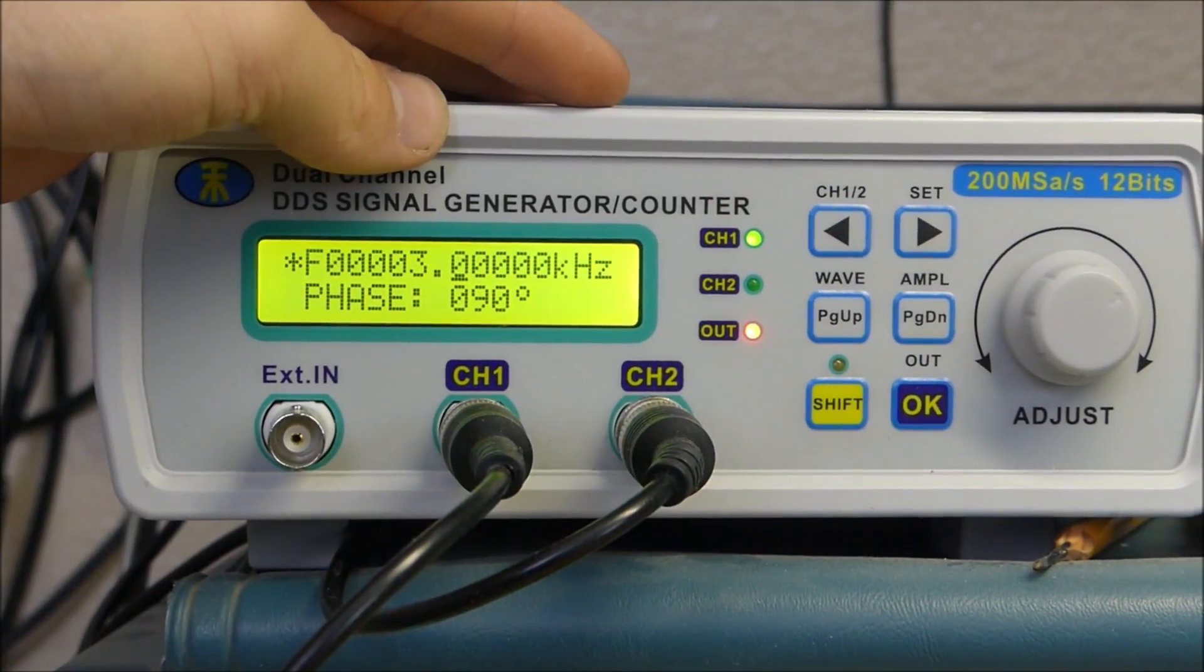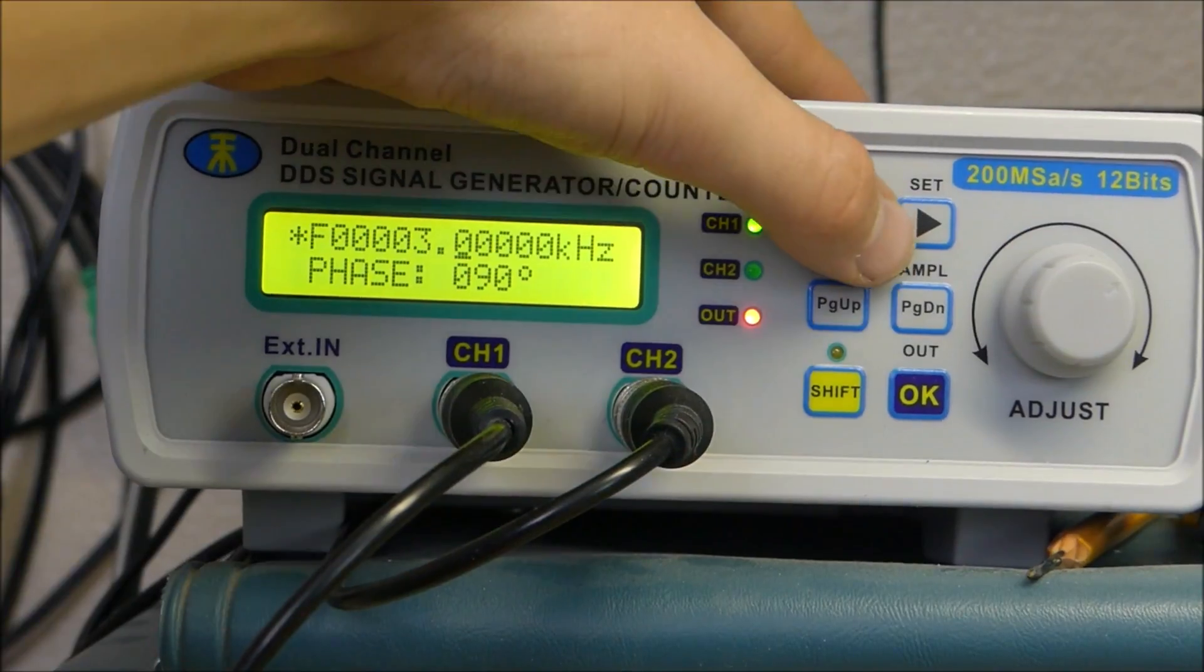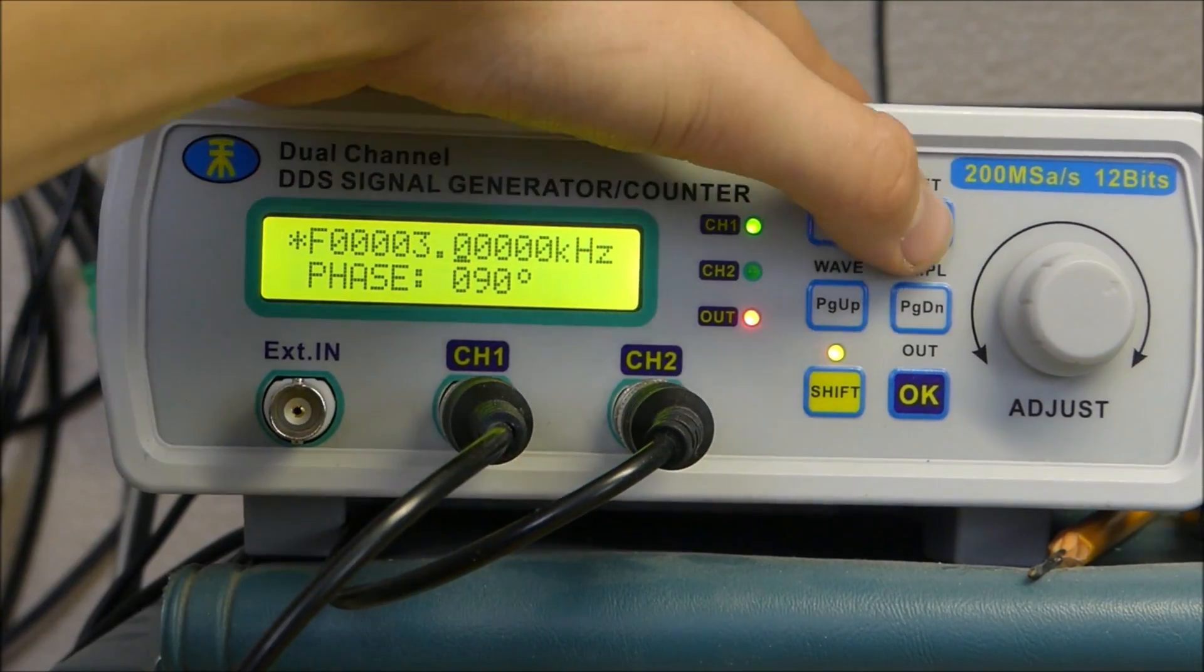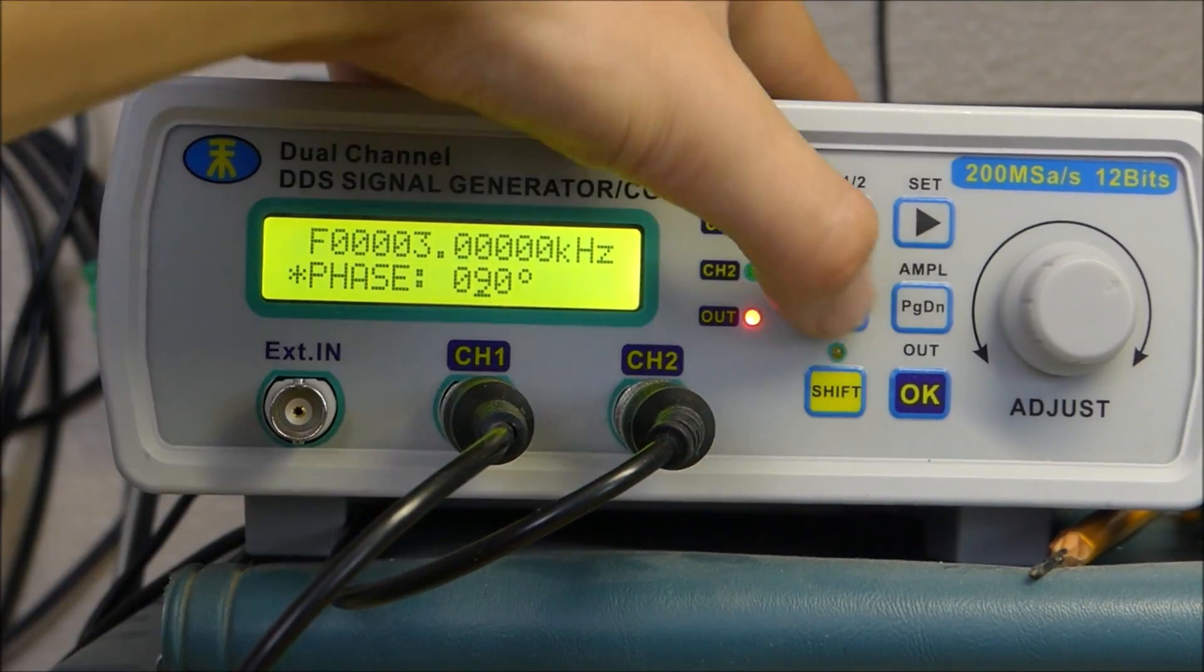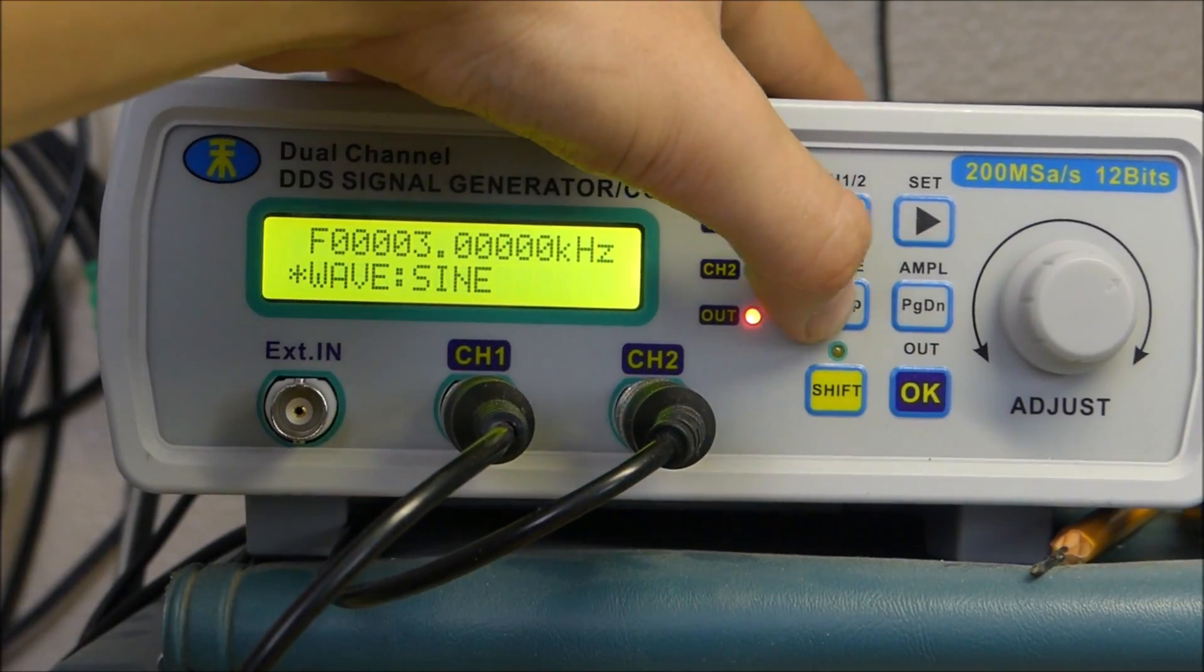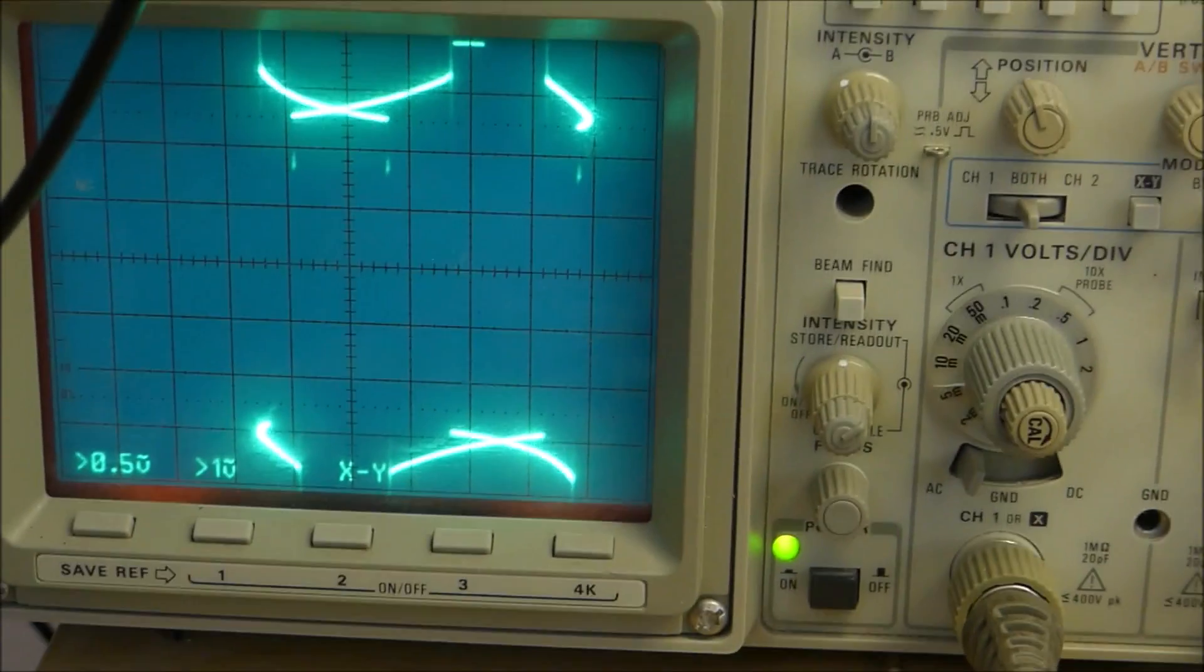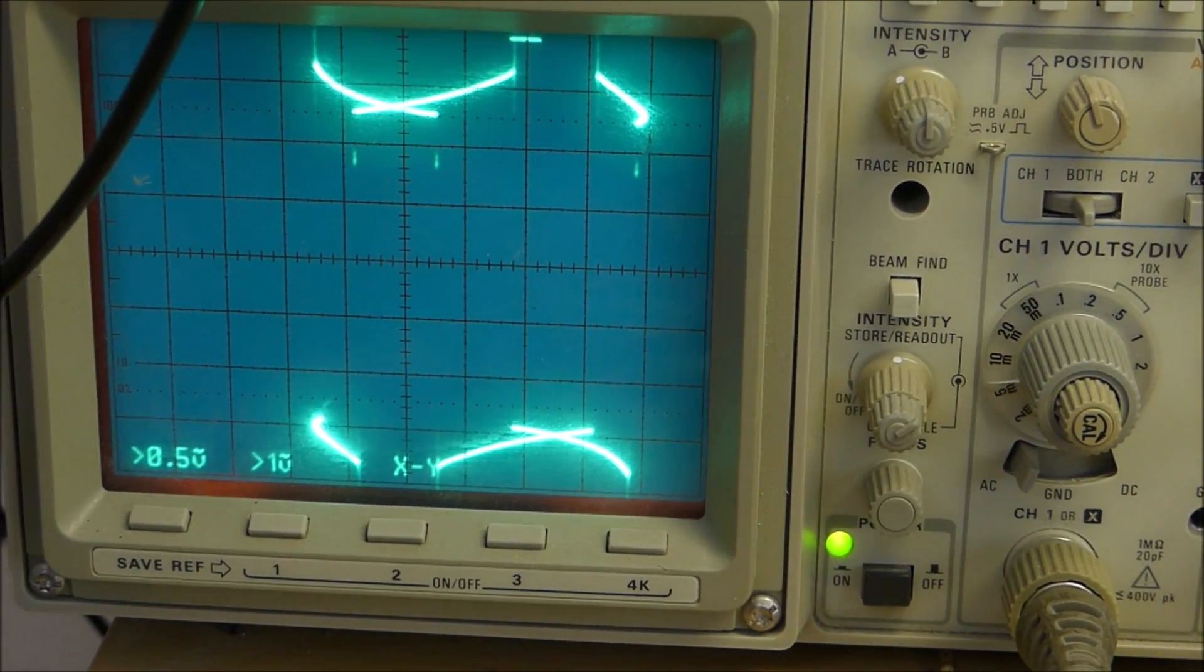We shall click shift, set, and we shall change the wave to a square wave. And whoa, what happened there? Looks pretty crazy.